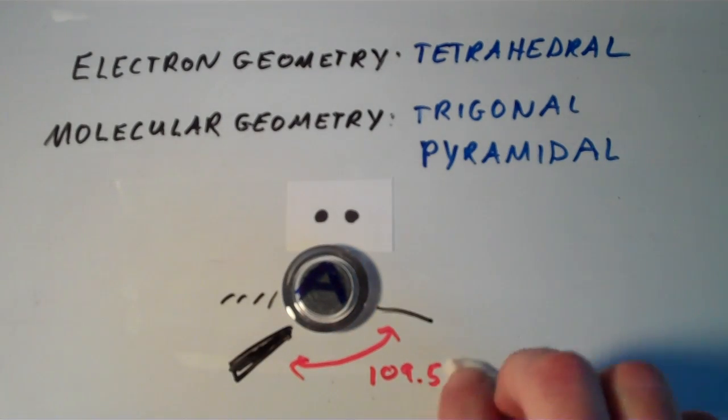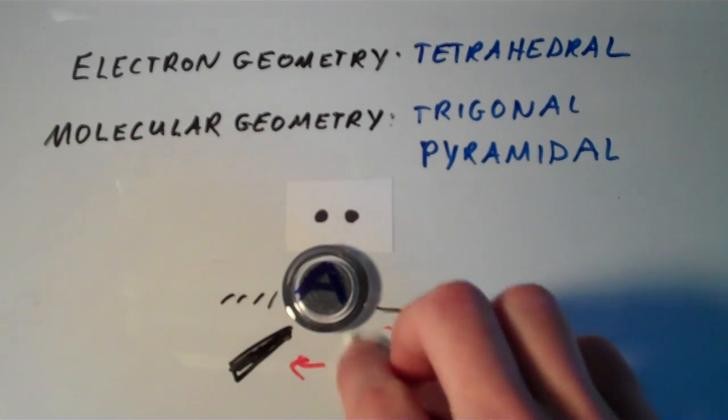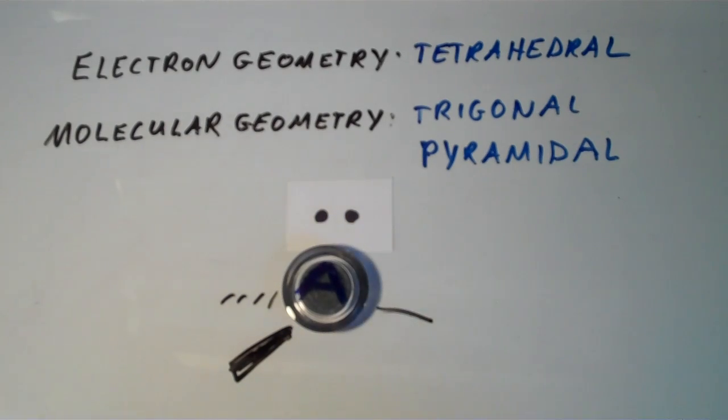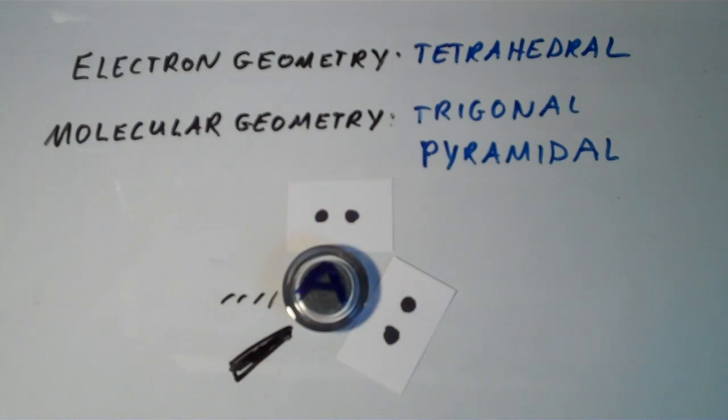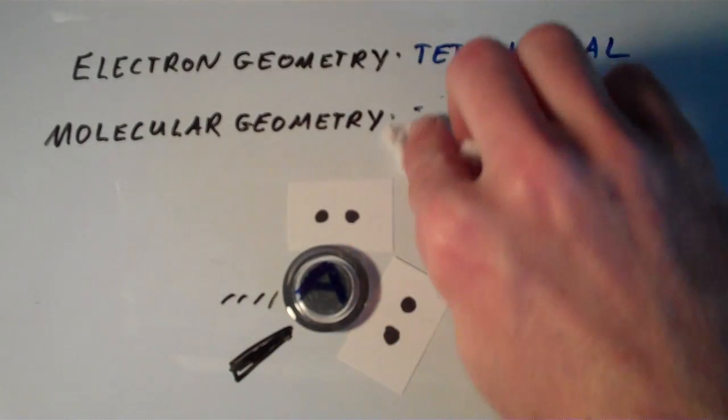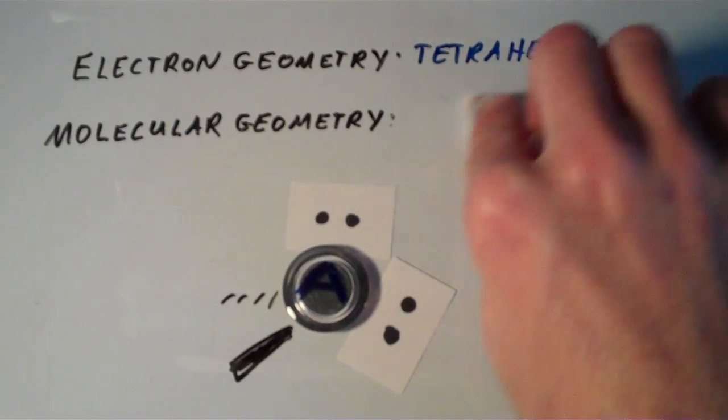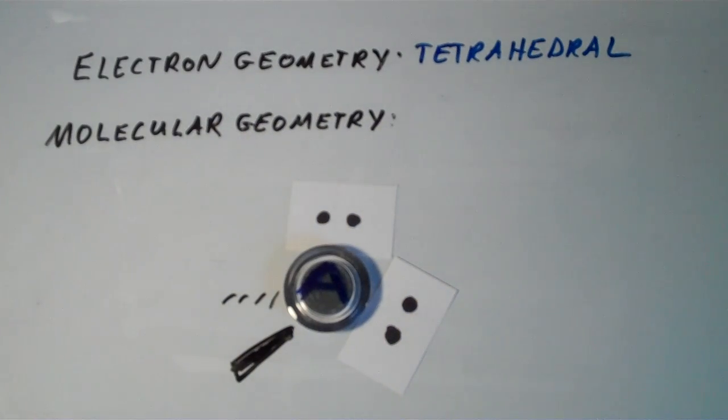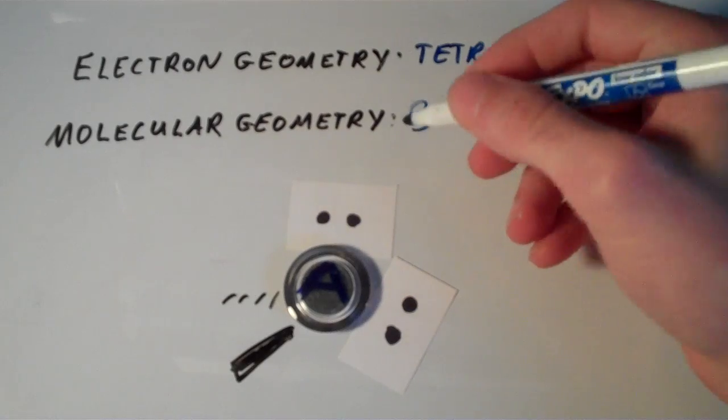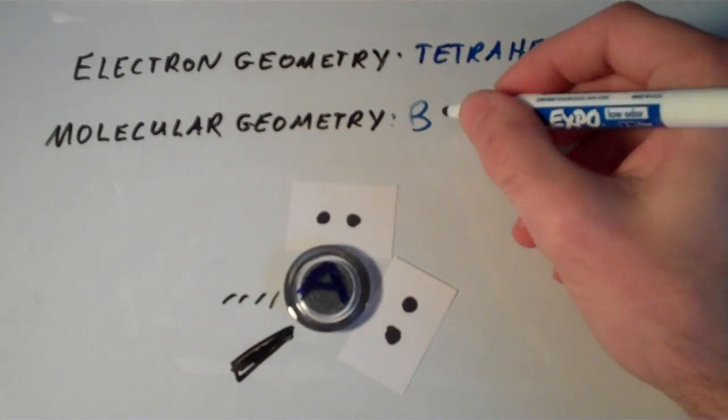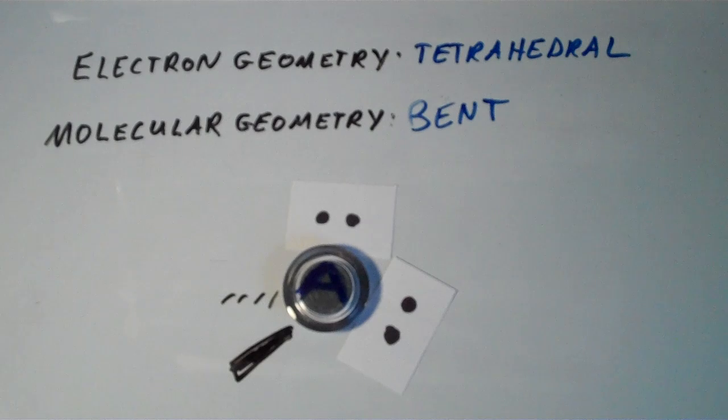What if we have two lone pairs? So what if we have two bonds to atoms and then two lone pairs? Well, the electron geometry is still going to be tetrahedral. But if I stick another lone pair on there, then that will give rise to another bent geometry. Although different from the bent geometry that we saw with three electron pairs, because the bond angle is going to be 109.5 instead of 120. So this is also bent.